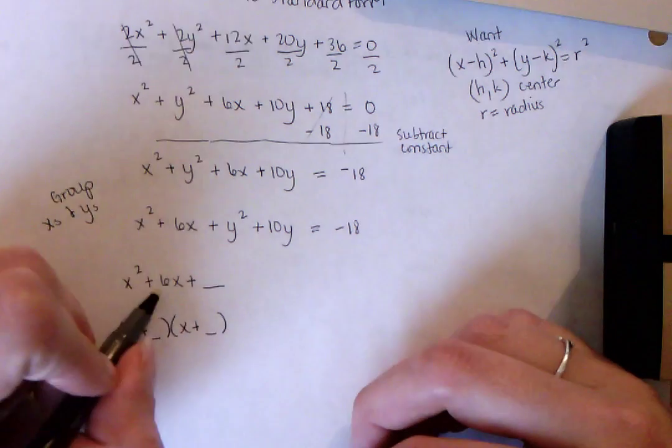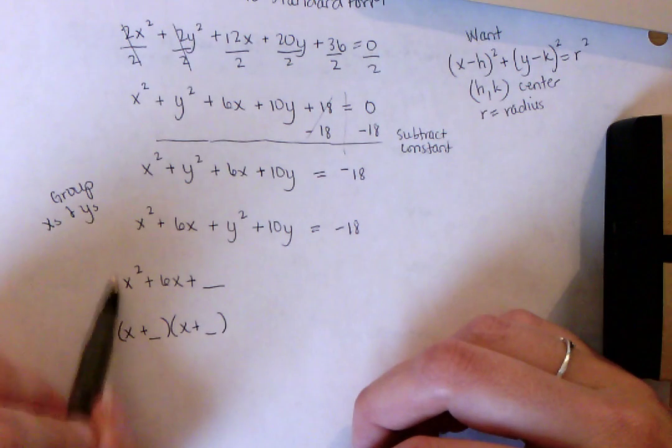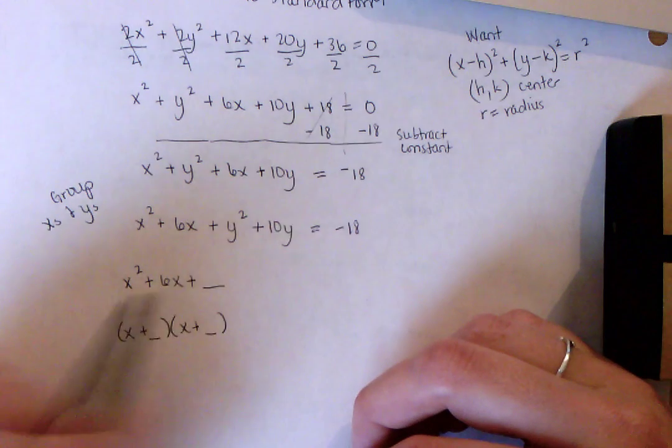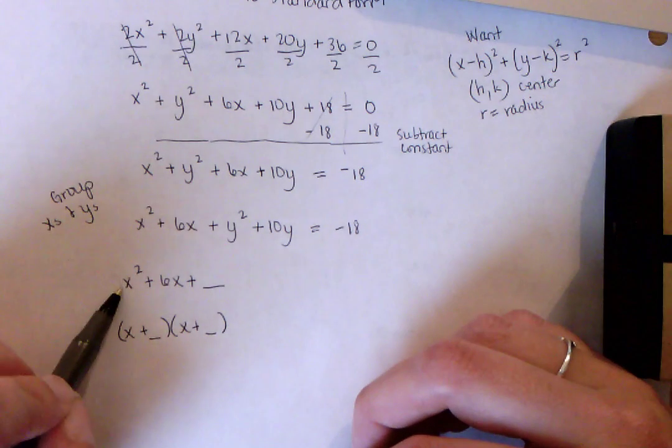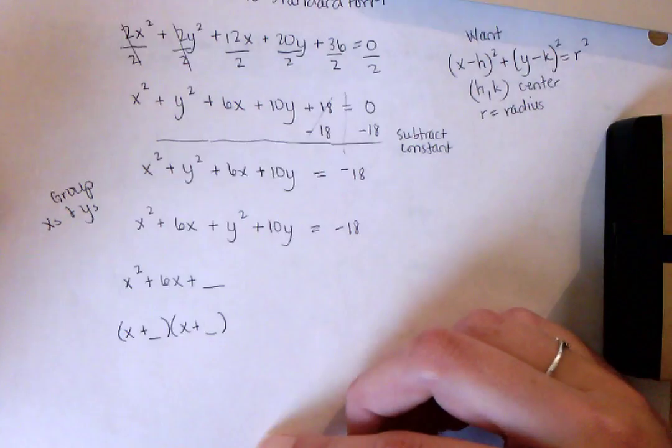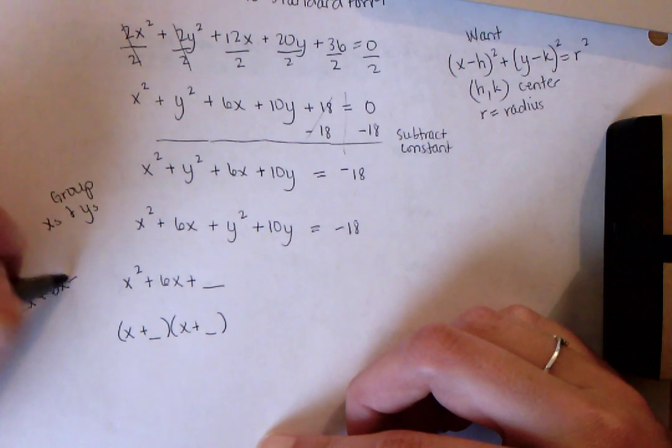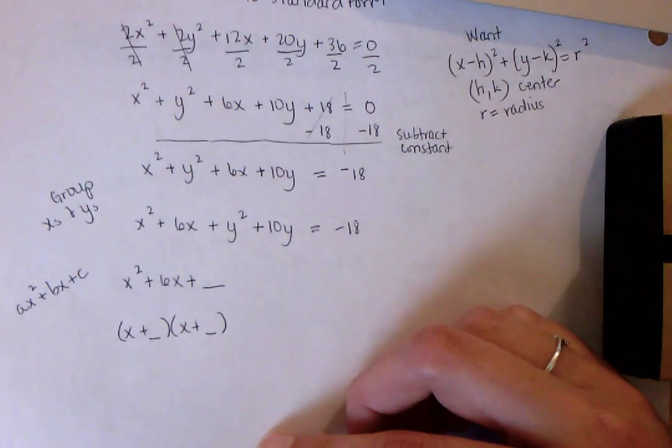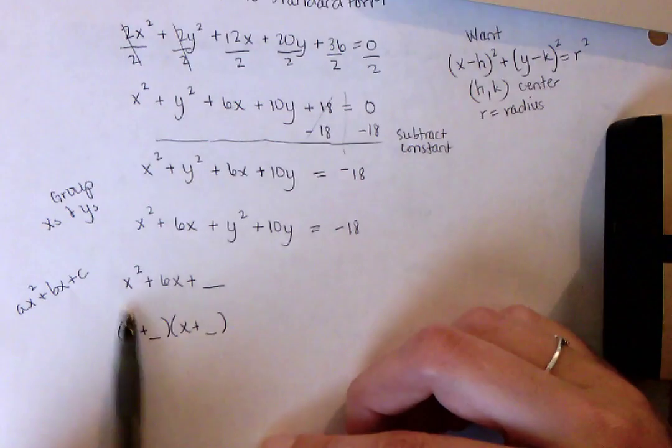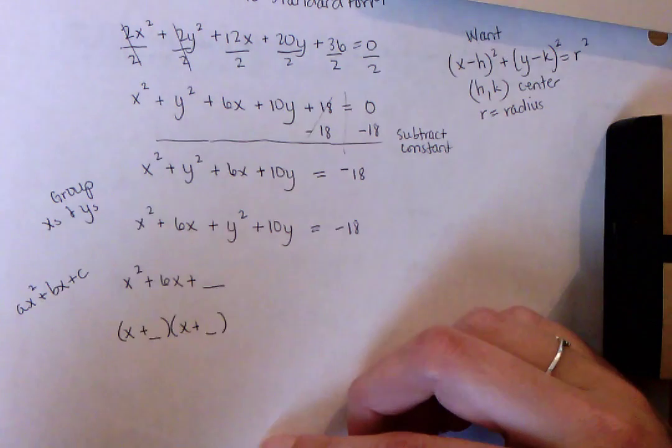So how you find this is we take half of b. Remember a is the number out in front of the leading coefficient, or the number out in front of the x squared, that's a. b is this number, the one out in front of x, and c is the constant. So ax squared plus bx plus c, that's the standard form of a parabola basically. Again, a is 1 here, b is 6, and c is we don't know it yet, we're going to try to find that perfect number, that perfect square.